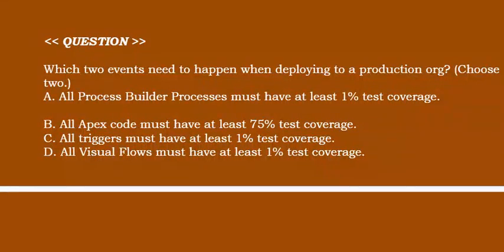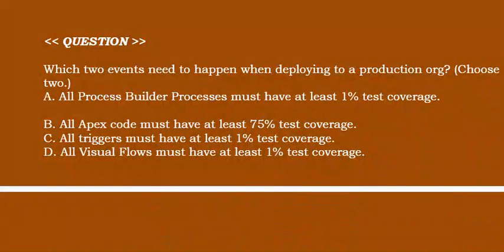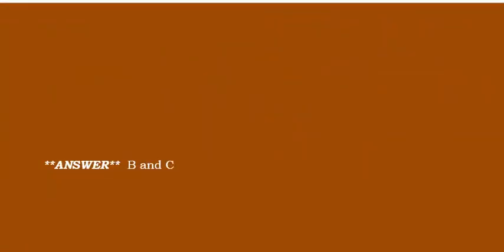Which two events need to happen when deploying to a production org? Choose two options. Option A: all process builder processes must have at least 1% test coverage. Option B: all Apex code must have at least 75% test coverage. Option C: all triggers must have at least 1% test coverage. Option D: all visual flows must have at least 1% test coverage. Correct answer is Option B and Option C.